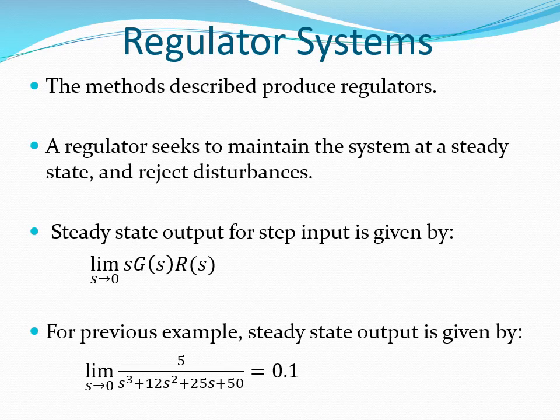The methods that we just described are used to design regulators. A regulator seeks to maintain the system at a steady state output and reject disturbances. An input signal that is used to measure the performance of a regulator is the step input. The steady state output for a step input is given by the limit of G(s)R(s) as s goes to 0. If we apply this formula to the previous example, the steady state output works out as 0.1. This formula is important when designing state feedback systems that require a steady state gain. I will leave you to go and find out how this is done.